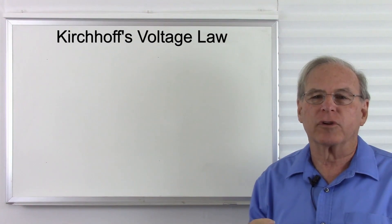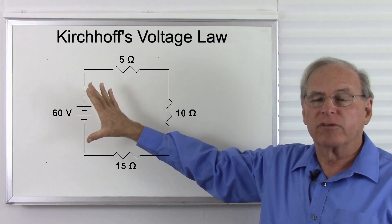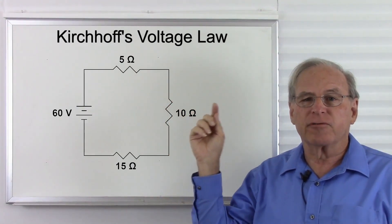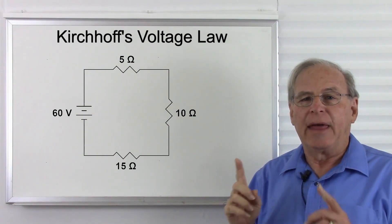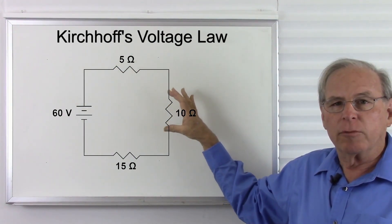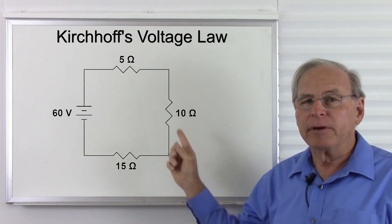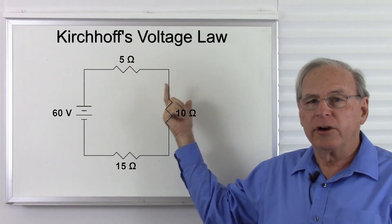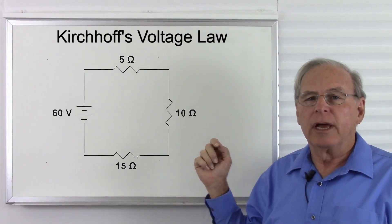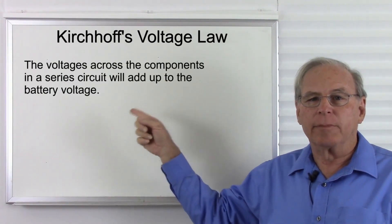Now that's not very useful, so let's put it in more useful terms. Here we have a 60 volt battery, so the total voltage available in this circuit is 60 volts. There will be a voltage difference from one side of each resistor to the other — so much voltage across the 5 ohm resistor, so much across the 10 ohm resistor, and so much across the 15 ohm resistor. And those three voltages must add up to the battery voltage.